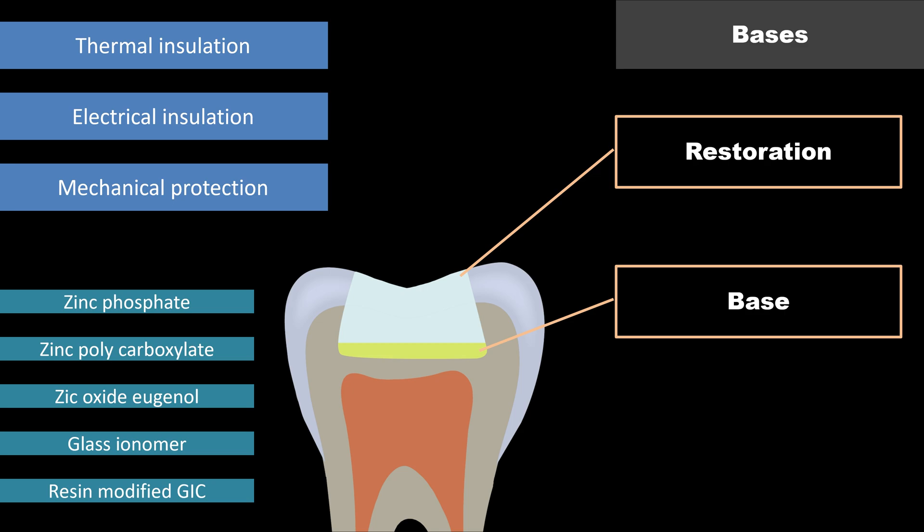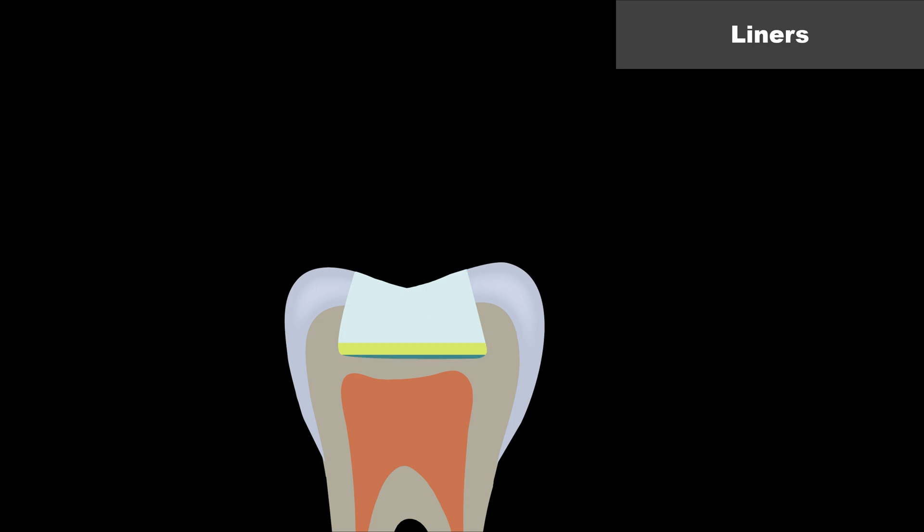We can also use zinc polycarboxylate and zinc oxide eugenol, which is a low-strength base. Zinc oxide eugenol can be used as a sub-base, with a stronger base like zinc phosphate or zinc polycarboxylate placed on top before the restoration. Glass ionomer and resin-modified glass ionomer cement are ideal bases under composite restorations. A base should be chosen depending on the type of restorative material and is indicated when the remaining dentine thickness is less than approximately 2 millimeters.